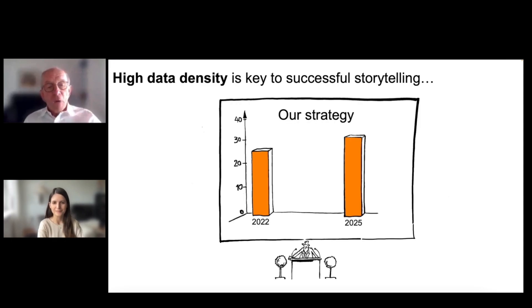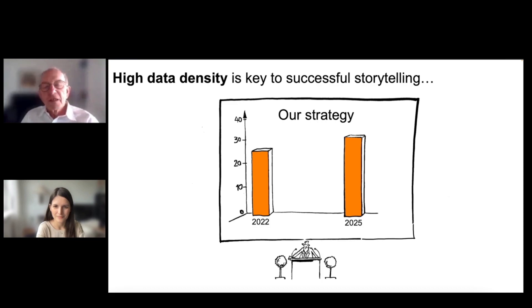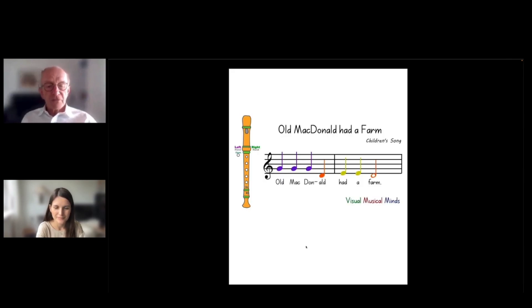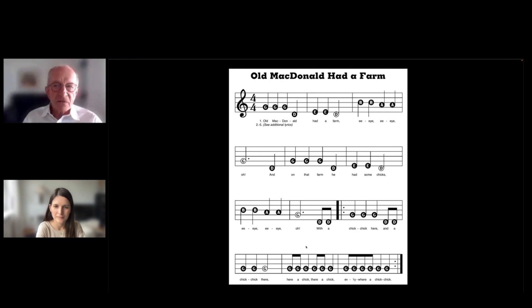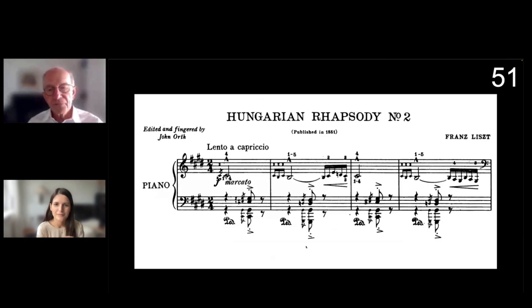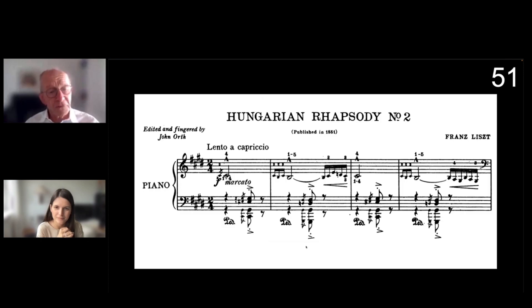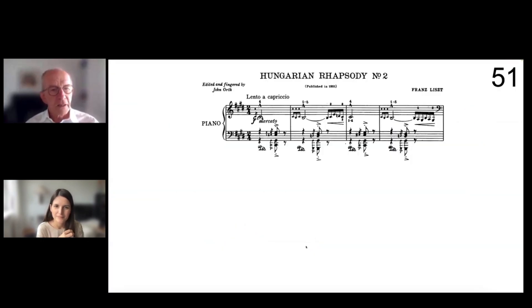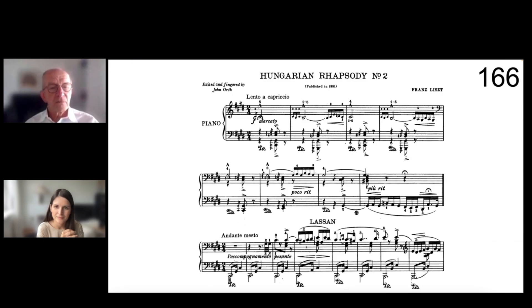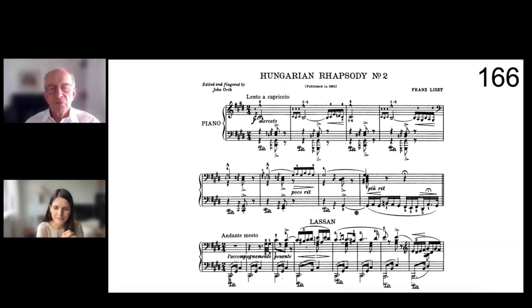Look at this guy giving a presentation: 'our strategy is clear, going from 22 to 25' — it is two values only on a big screen. Then look at this little piece of music for children — seven values on a screen. Here it is 47 already, and this guy learns to play the flute with 47 notes. But look at the professional: this is professional music notation — 51 values. The Hungarian Rhapsody overview shows how musicians get an overview of the whole music piece.